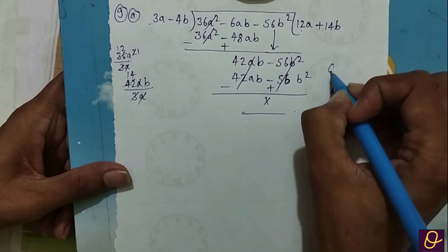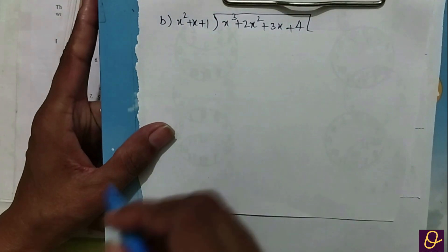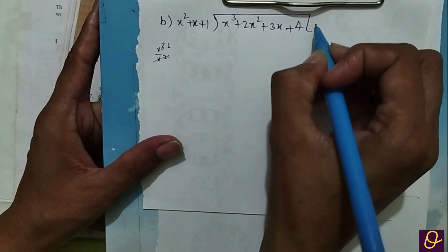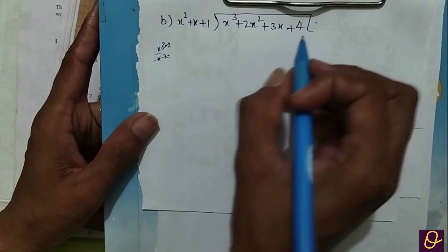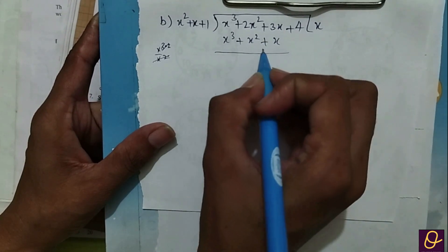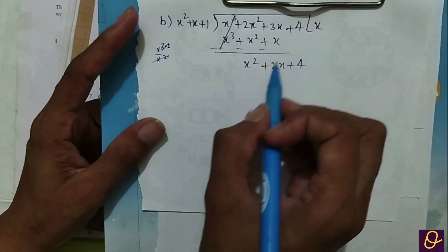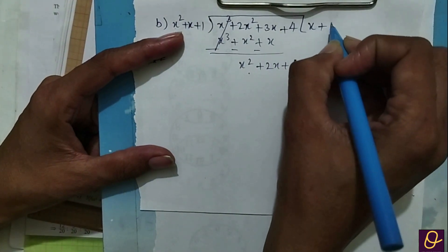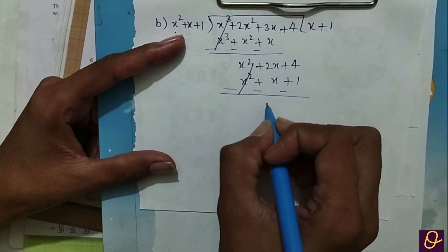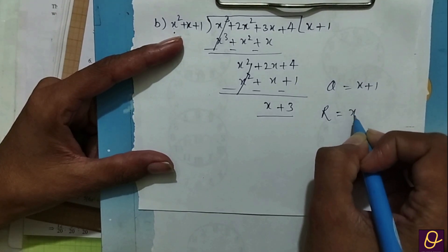Now we have B part. Divide 2x² by 2. 2 cancel, 3-2-1, x. We have x² plus x², plus 1. Sign change, we cancel out x². We can have x and the quotient is x plus 1 and we have x plus 3.